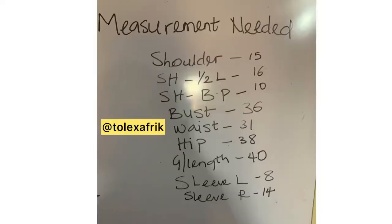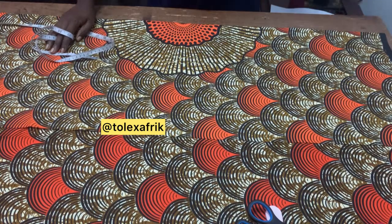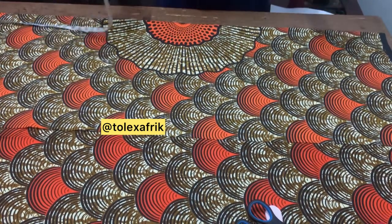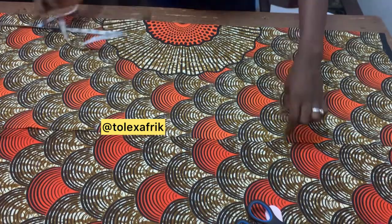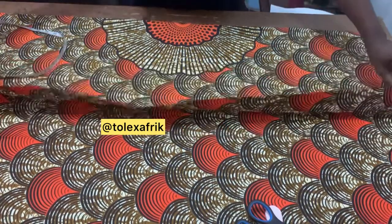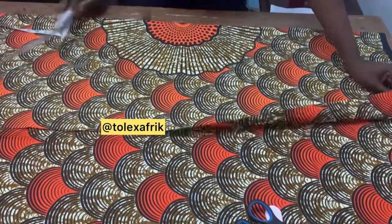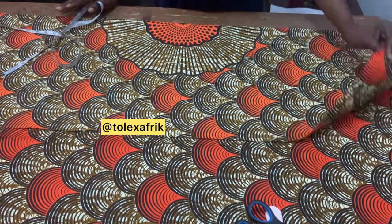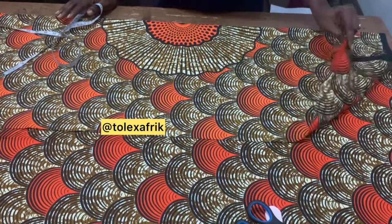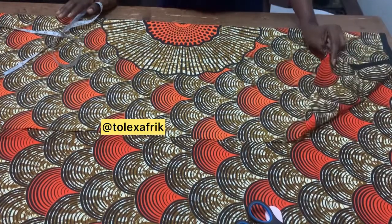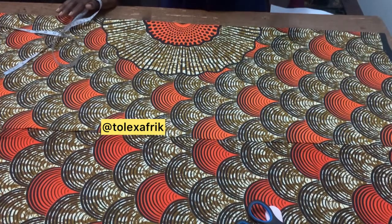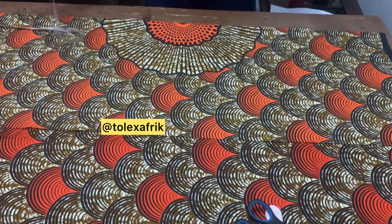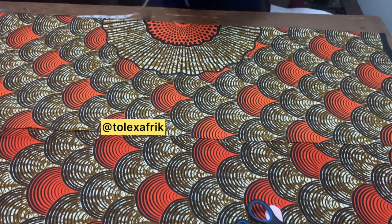Right here are the measurements needed for this particular dress. Start with the cut bit. What you need to do is fold your fabric with your largest circumference. If you're a very busty person and your bust is the largest circumference, you fold your fabric using your bust measurement divided by four. If your hip is your largest body circumference, fold using your hip measurement divided by four, then you have your allowance.